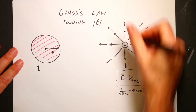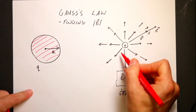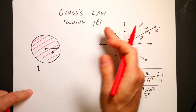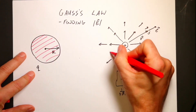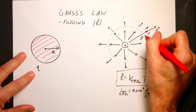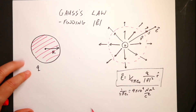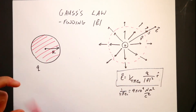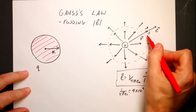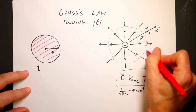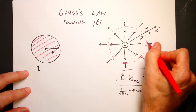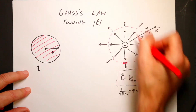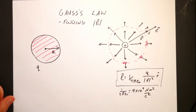Gauss's Law deals with the pattern of a field around an object. The electric field is always pointing radially outward and decreases in strength as you get further away. Imagine constructing an imaginary sphere — we call this a Gaussian surface, it's not really there. At every location on it, the electric field is perpendicular to the surface area, which gives us a very simple way to calculate the electric flux.